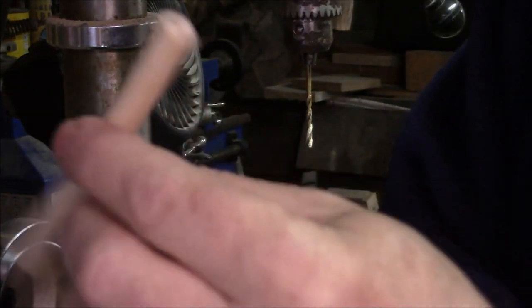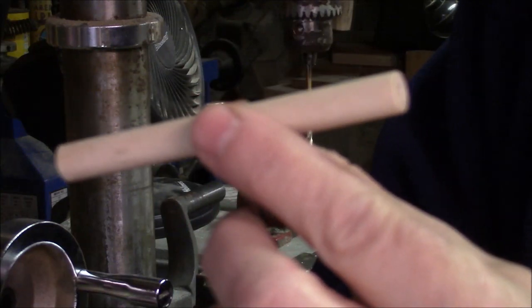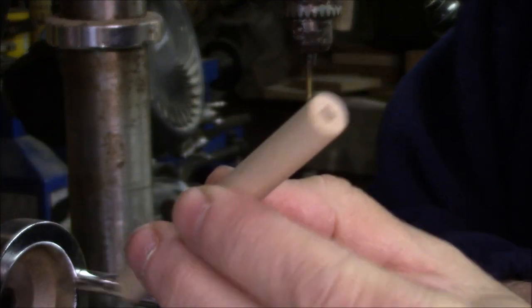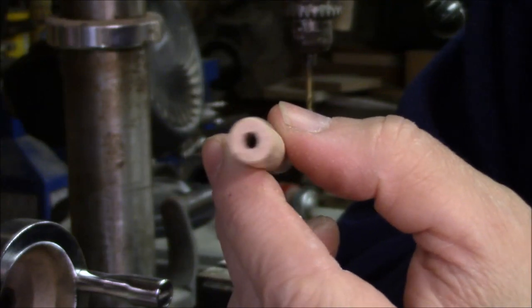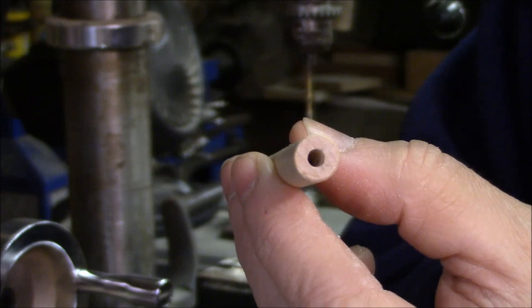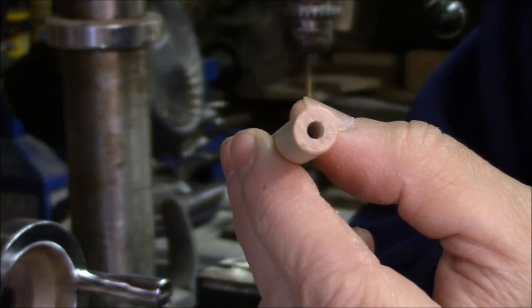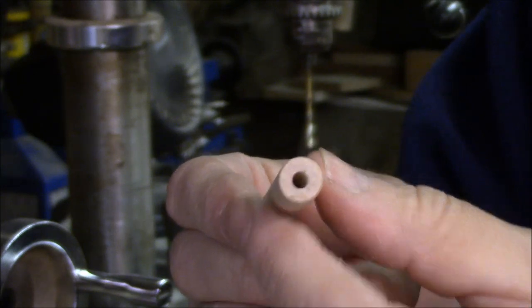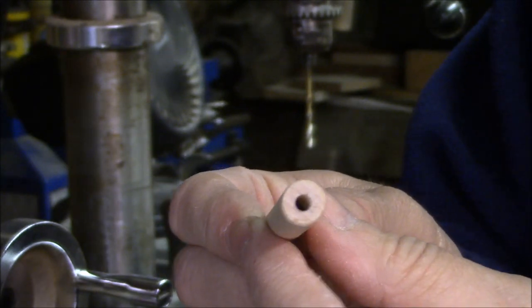So what have I done here? I have cut a three-eighths inch dowel about three and a half inches long, and I've drilled a five thirty-secondths hole down the middle of it about an inch deep. This is going to become the handle of the umbrella, and the hole will accept a pin that will have the pinwheel part of the whirly gig on it.